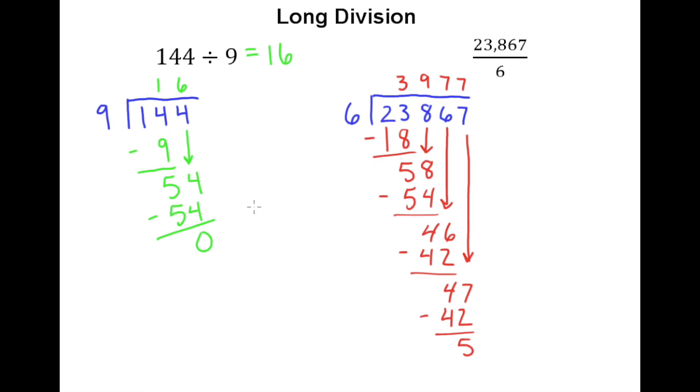So what we end up with here is an answer of 6 goes into 23,867 3,977 times with a remainder of 5. Or in other words, you can put 6 into that number 23,867 3,977 times but then there will still be a 5 left over.